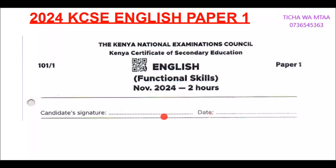This is the 2024 KCSE Paper One, first page. The paper number is 101 stroke one — this is Kenya National Examination Council. You are being tested on functional skills. Time is two hours. In this part you are supposed to write your name, your date — I think I have omitted it — and then here you are supposed to sign.